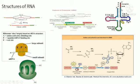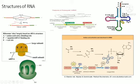The tRNA has a cloverleaf shape with four arms: the amino acid acceptor arm, the T-arm, the D-arm, and the anticodon arm. The anticodon arm binds to the mRNA, while the acceptor arm carries an amino acid. The acceptor arm always ends in the sequence CCA, to which the amino acid is attached.